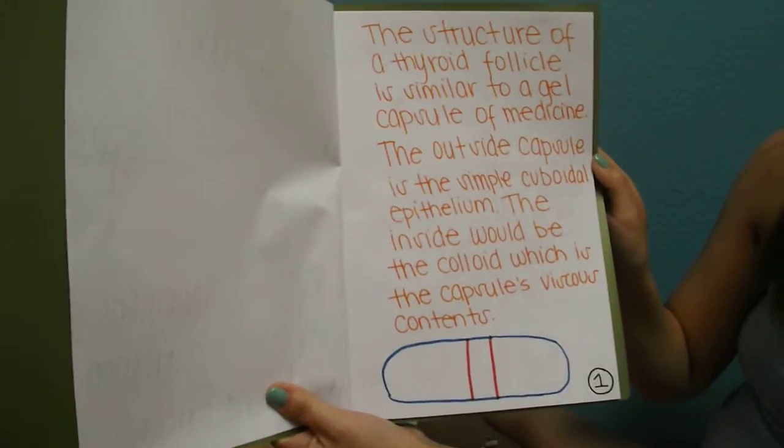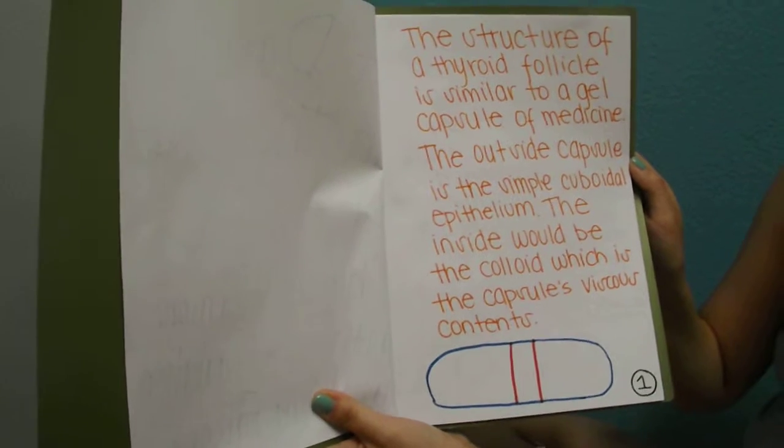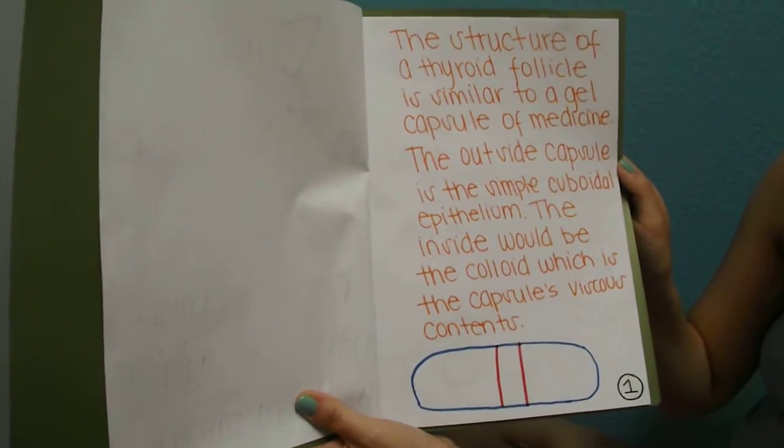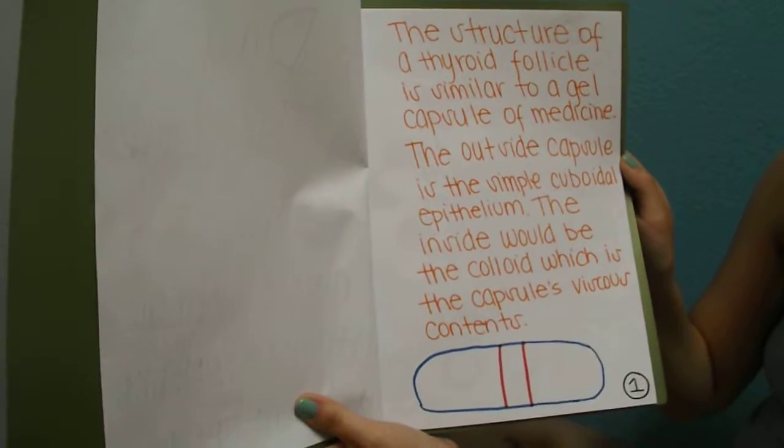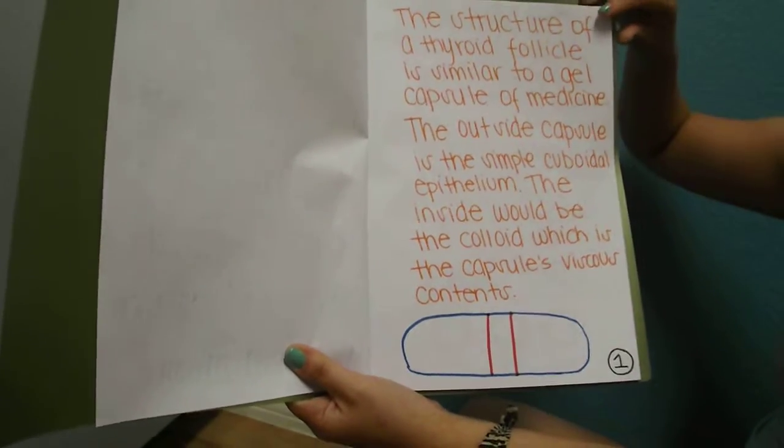The structure of a thyroid follicle is similar to a gel capsule of medicine. The outside capsule is the simple cuboidal epithelium. The inside would be the colloid, which is the capsule's viscous contents. And then down here we have a capsule of medicine as an example.